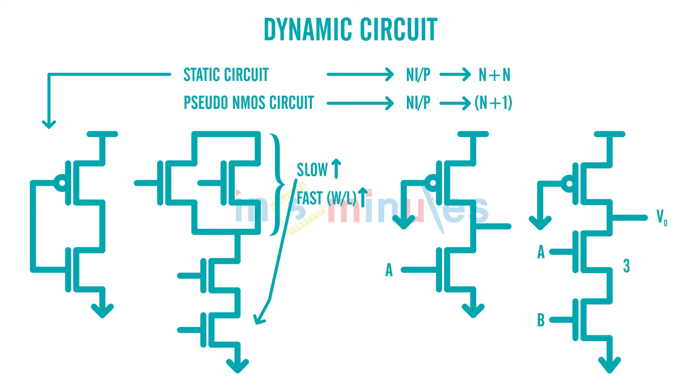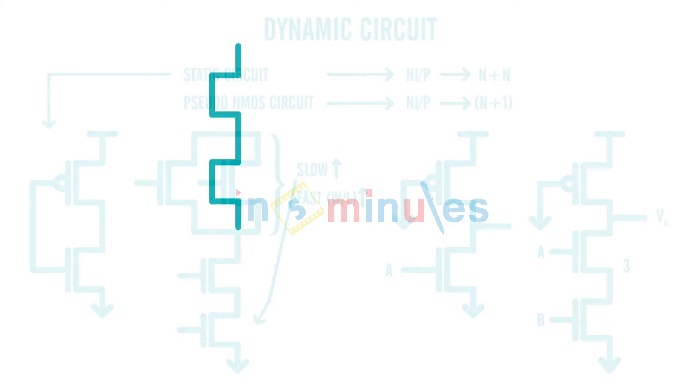For a two input NAND we have total of two plus one, three transistors. So it helped us in saving area in a way. At the same time it allowed us to reduce our dependencies on PMOS. But then this circuit, pseudo NMOS circuits, had its own drawback.